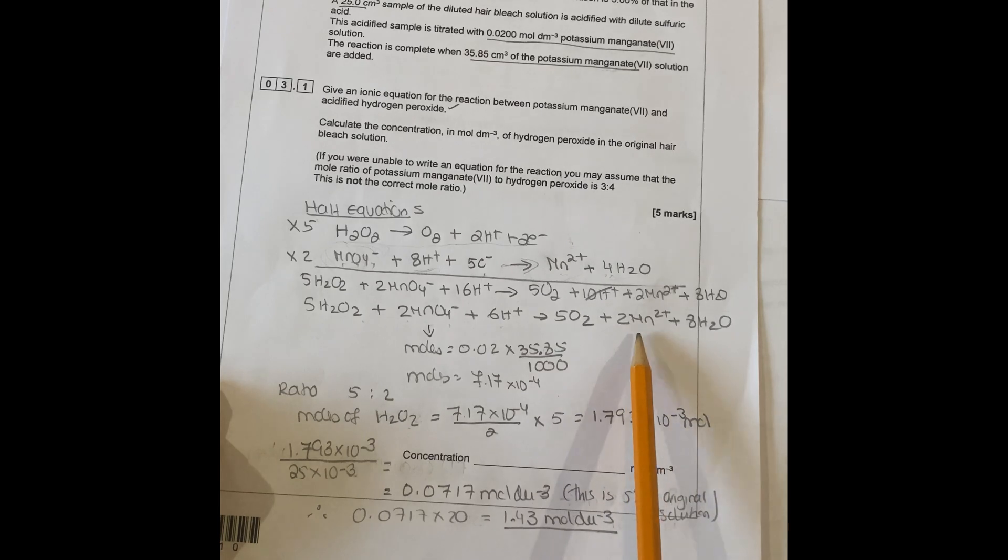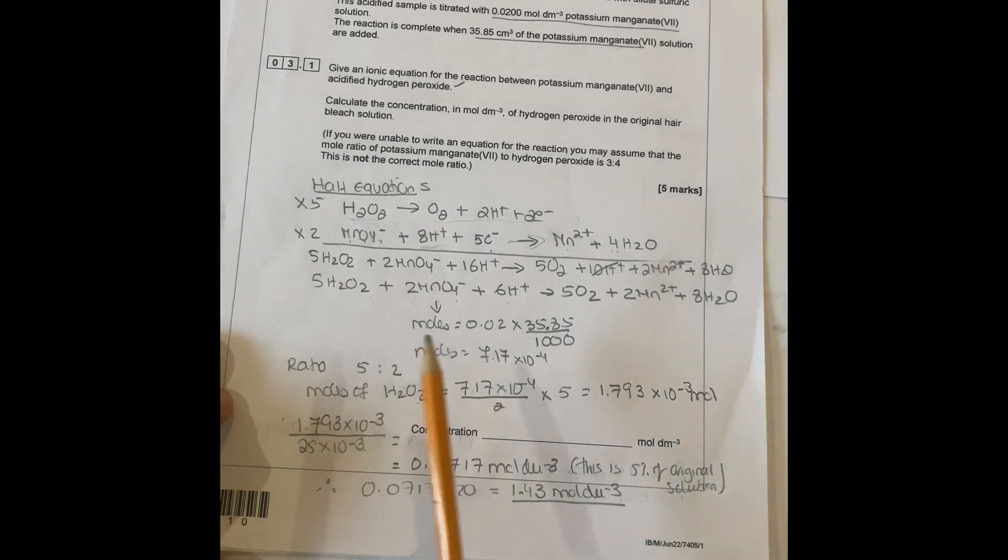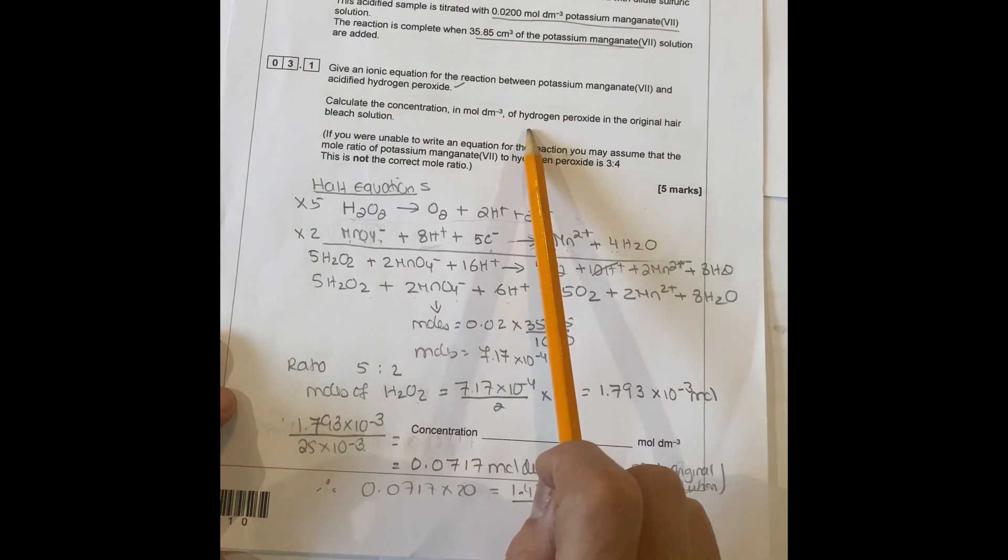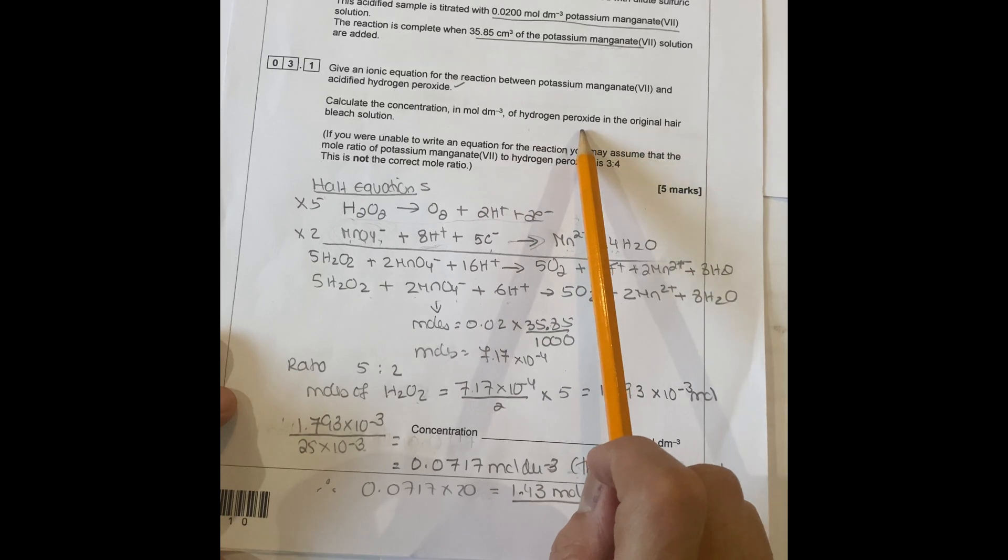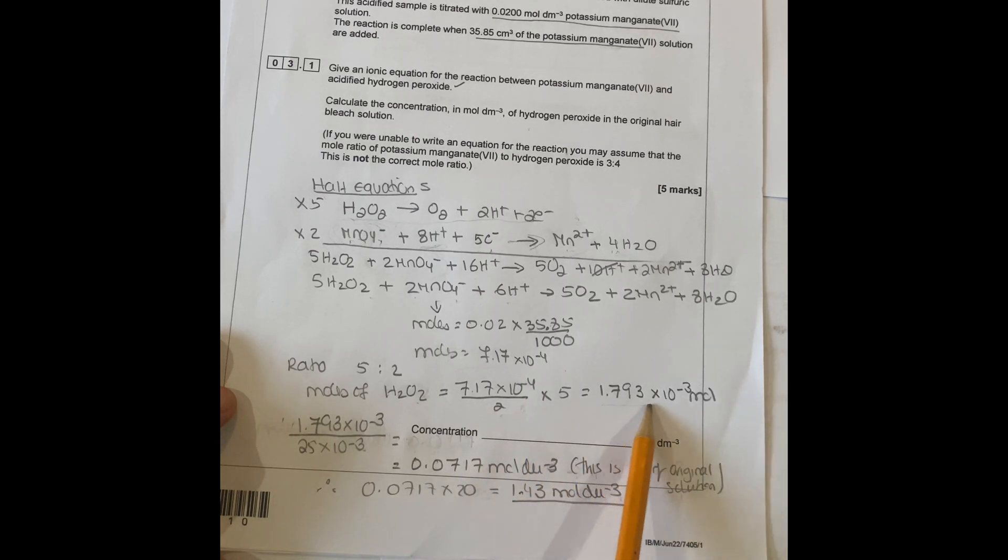The next thing is to calculate the concentration in mol per cubic meter of hydrogen peroxide. Because the ratio is five to two, you have five hydrogen peroxide to manganate. Moles of hydrogen peroxide is 7.17 times 10^-4 divided by two times five.